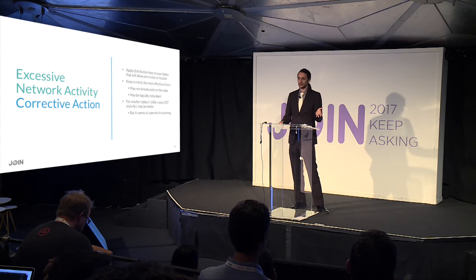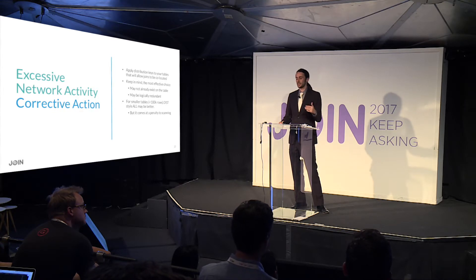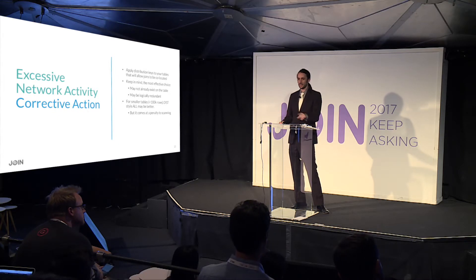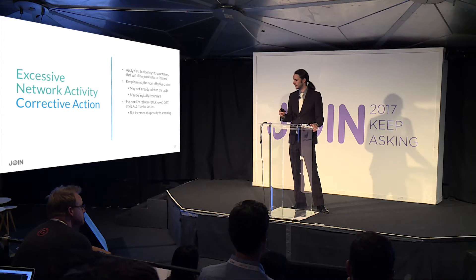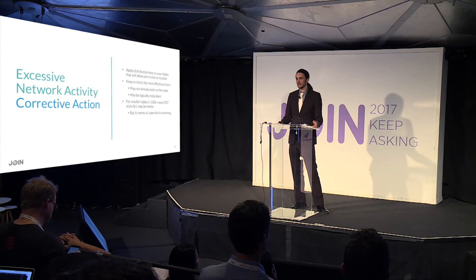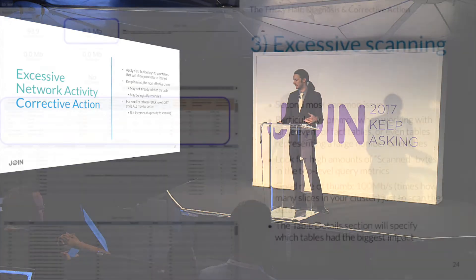Typical normalization says your seat should have a table ID, not a restaurant ID, since it's logically redundant. But for better performance, you can actually use that redundant column — distribute all three tables by restaurant ID so that whether you're joining table to restaurant, seat to table, or all three, they're already co-located. For smaller tables, typically under 100,000 rows, distribution style all may be a better strategy, but don't use it as a silver bullet as it comes at a penalty to scanning.